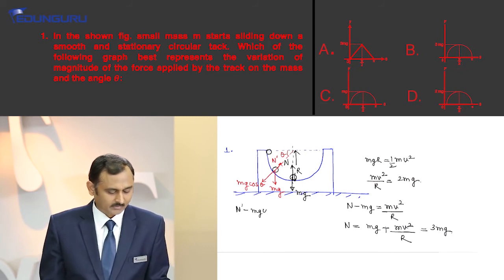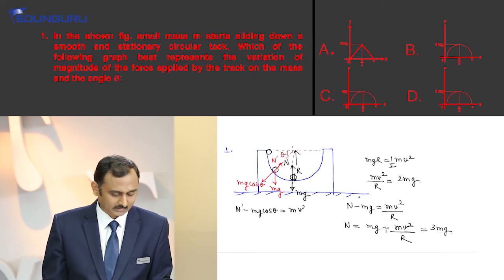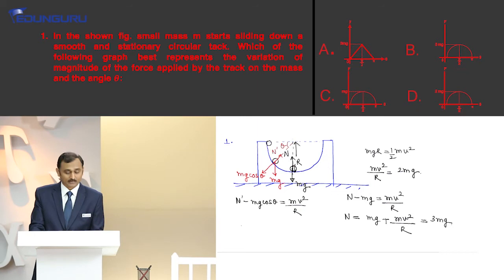So N dash minus mg cos theta equals mv squared by r. We have to find mv squared by r where v is the velocity at this point.